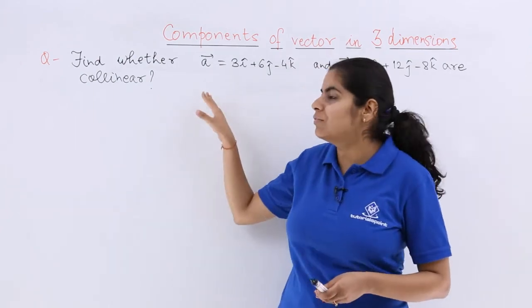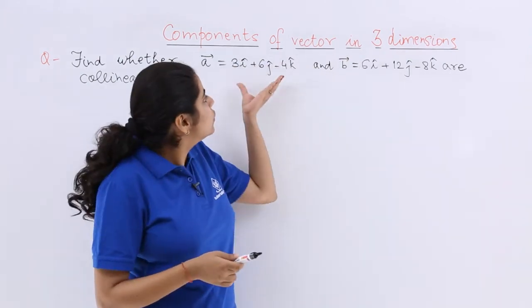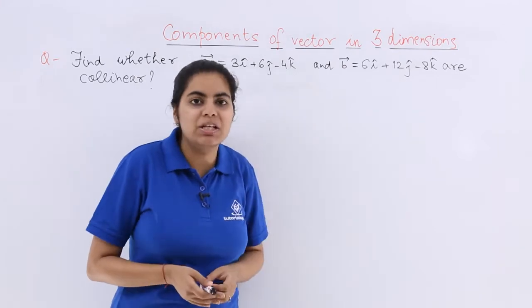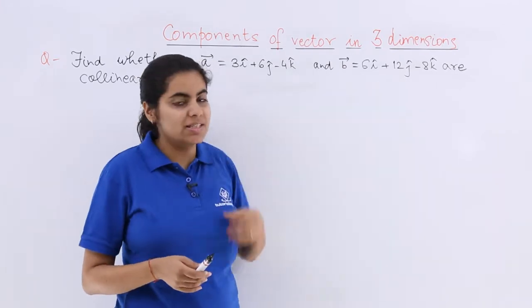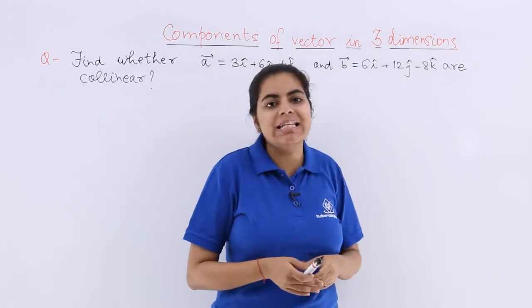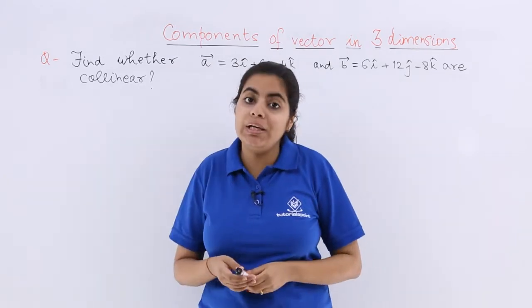The question says find whether vector a⃗ = 3i cap + 6j cap - 4k cap and b⃗ vector = 6i cap + 12j cap - 8k cap are collinear.